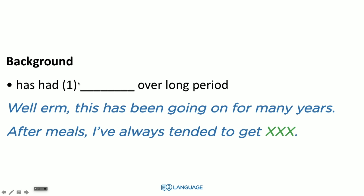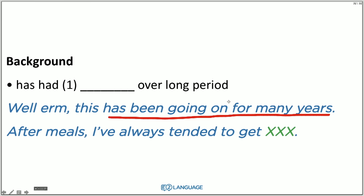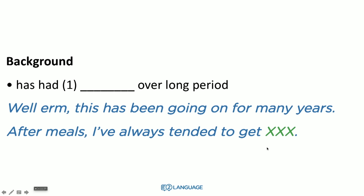Here's the note: 'has had something over a long period.' We're going to use synonymous language here — this is not going to mirror exactly what the patient says. The patient says: 'This has been going on for many years.' Here's your synonym: 'has been going on for many years' versus 'over a long period.' After meals, I've always tended to get — that's where the answer goes. You can see how they don't use the same words in the notes.